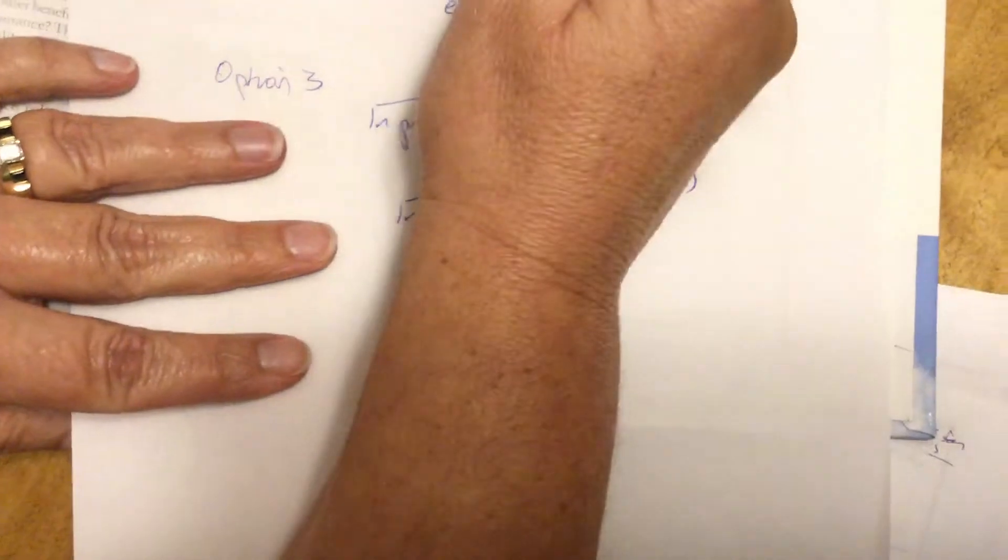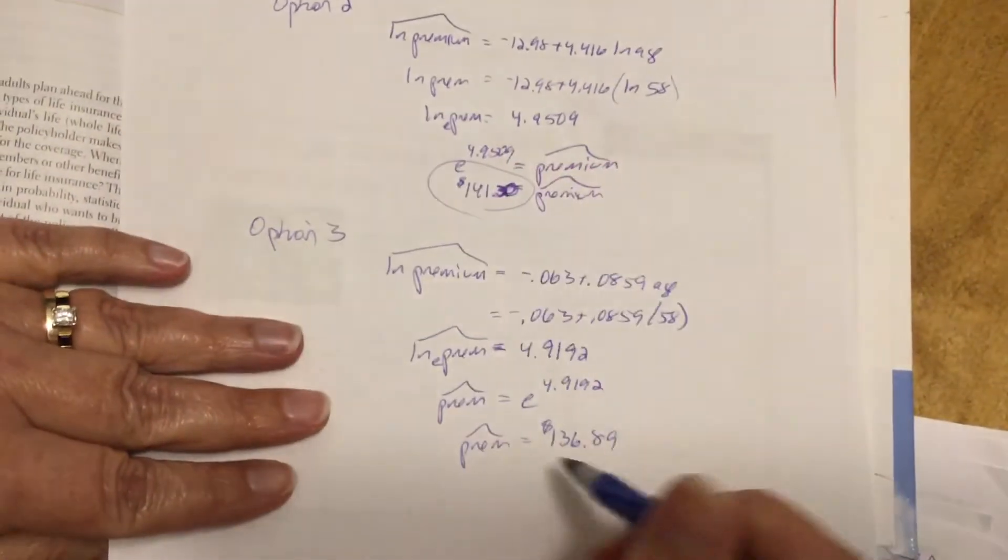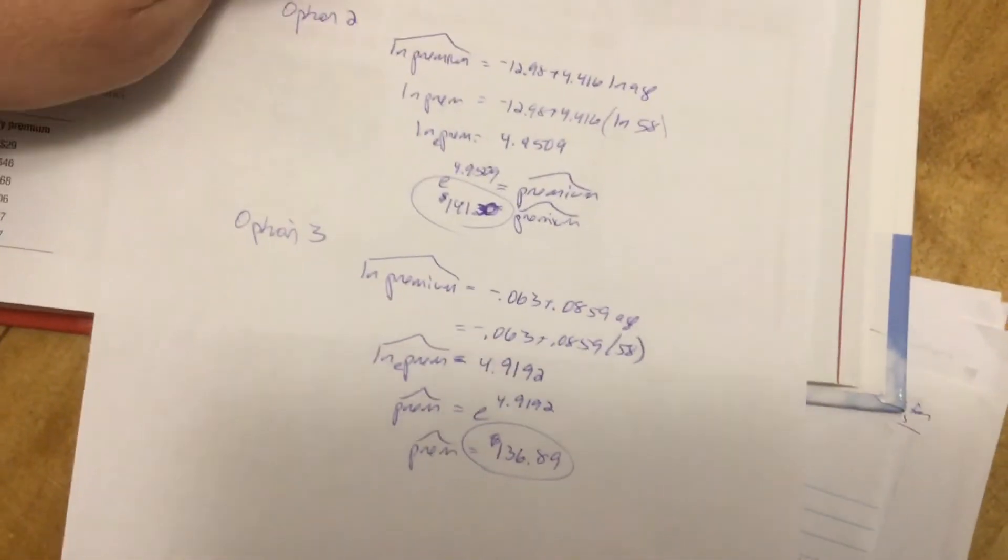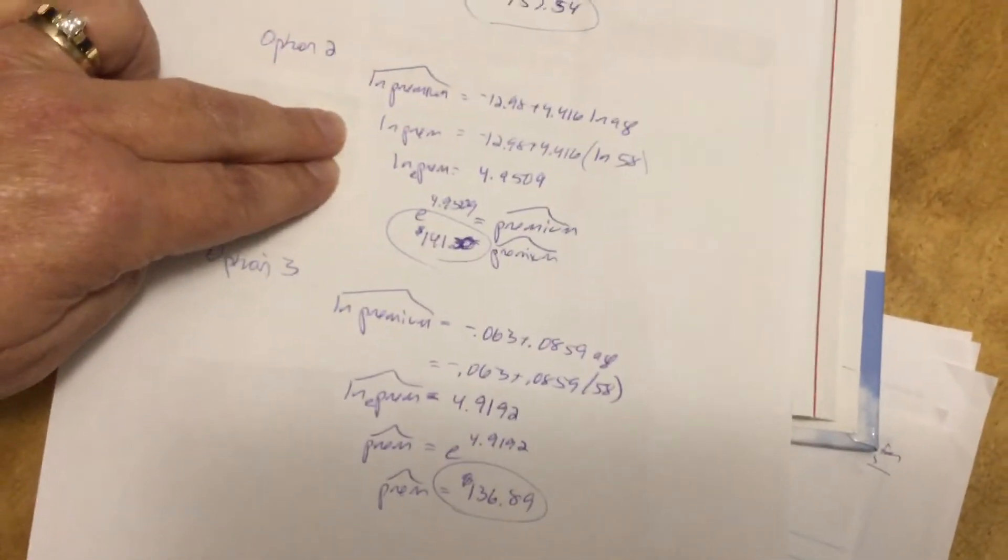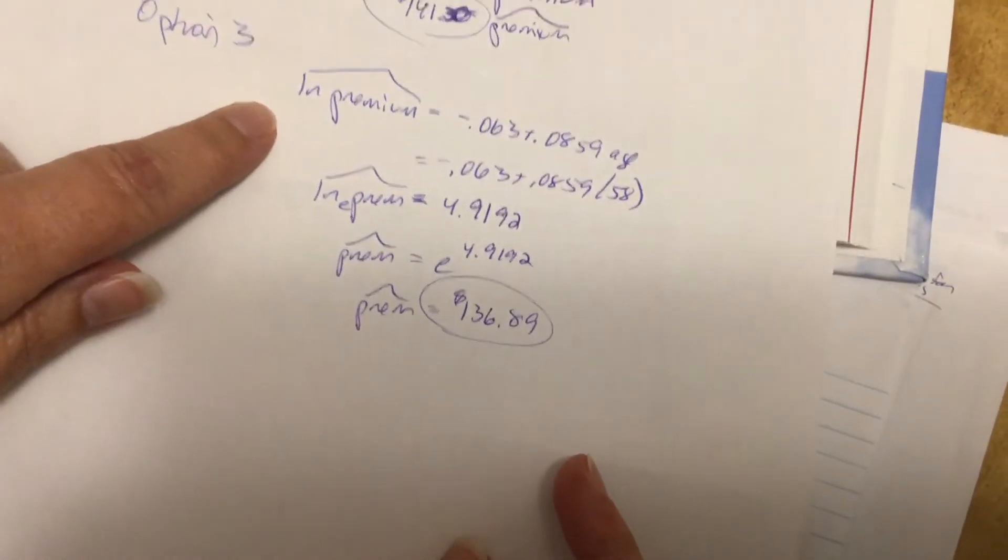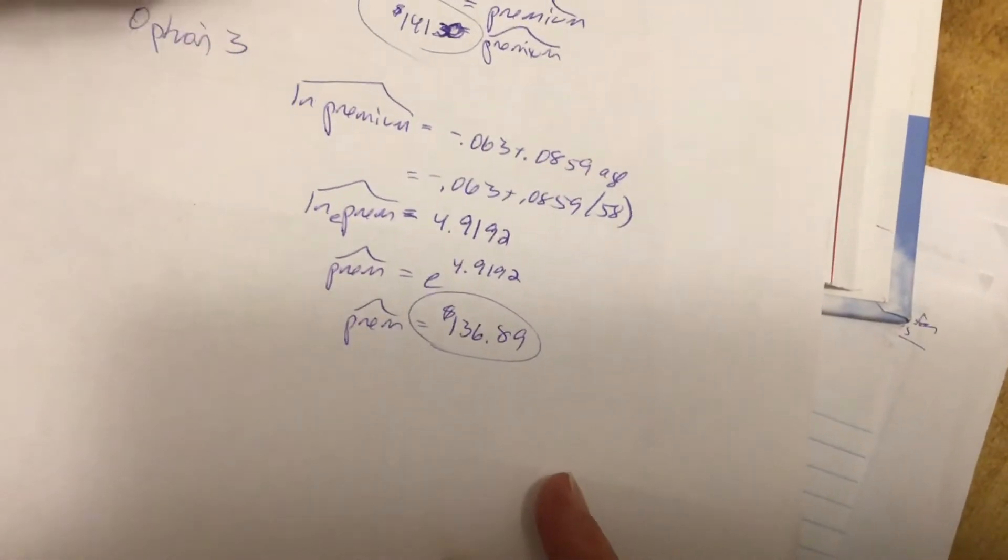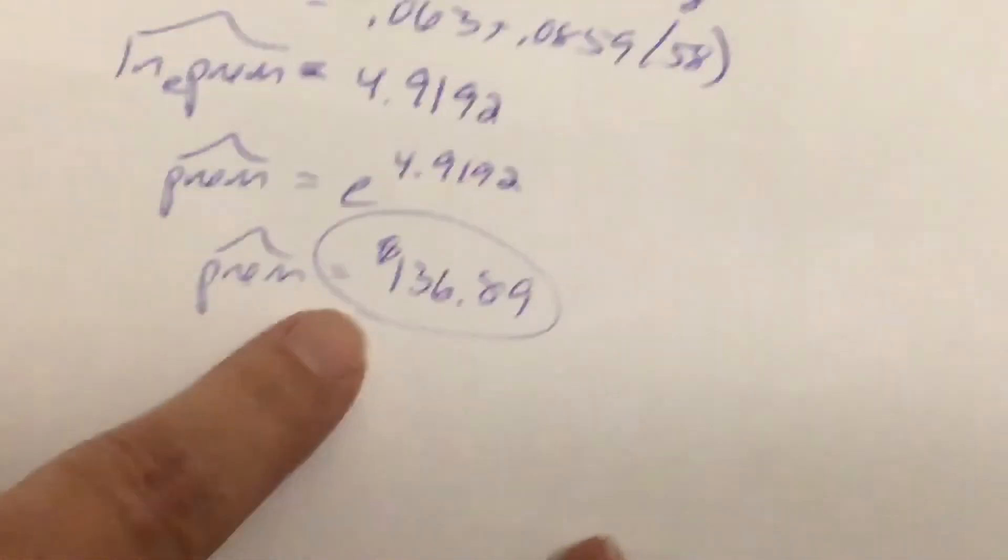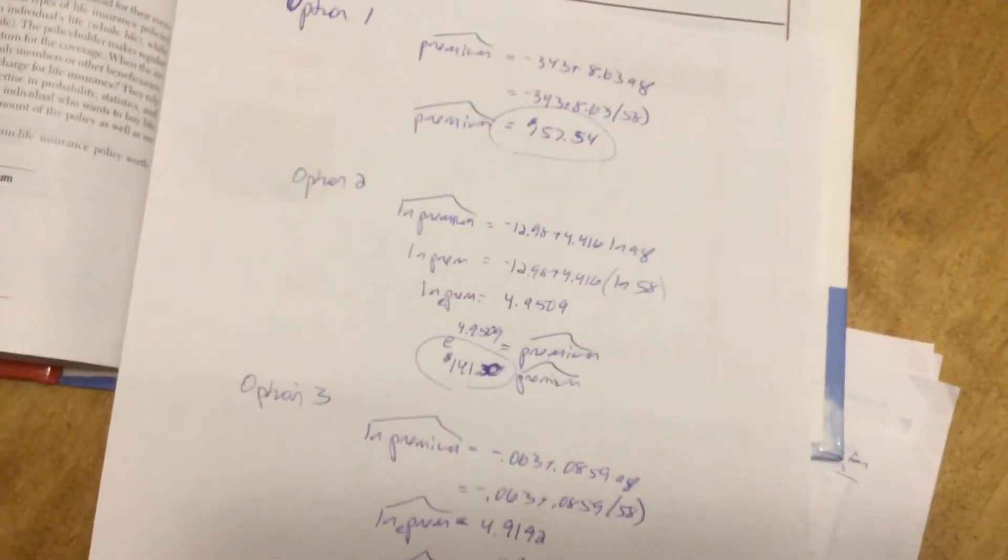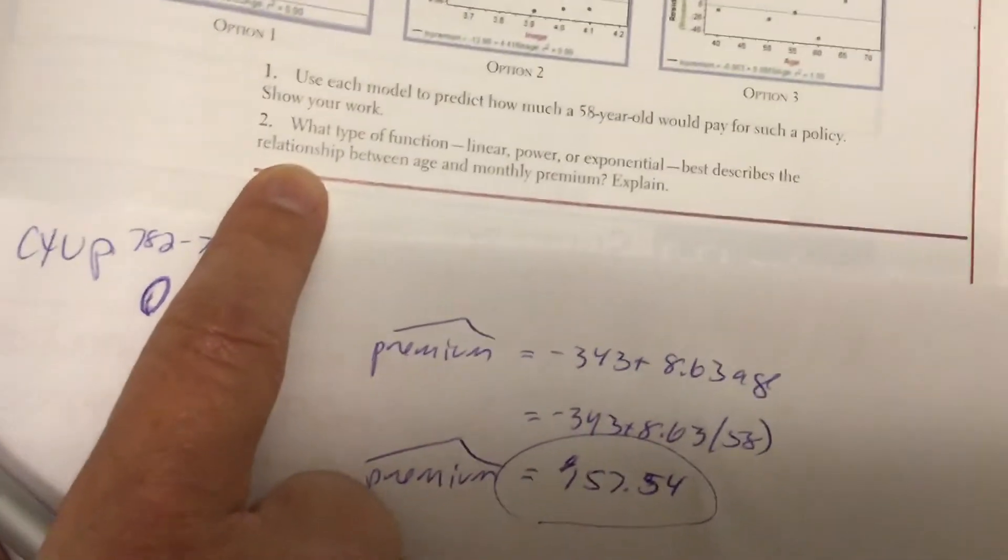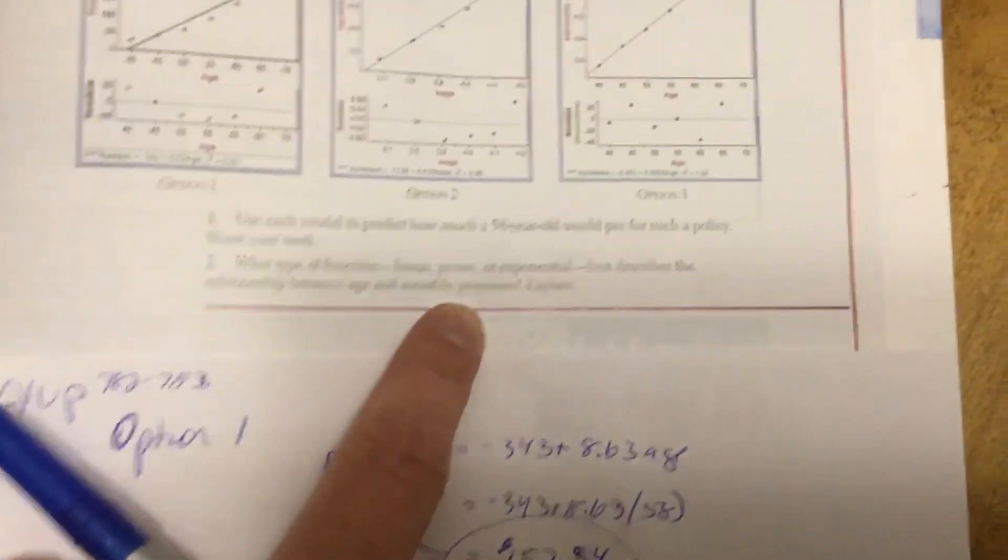All right. So these are our three different predictions for premiums. One's based on straight linear regression. This is natural logging both variables, and this one is natural logging just the response variable. Which one would you, come up a little bit, which would you rather pay when you're 58 years old? I'd rather pay that. It's the cheaper amount. So now come back up. Now it says, what type of function, linear, power, or exponential, best describes the relationship between age and monthly premium?